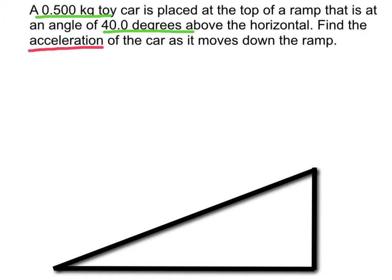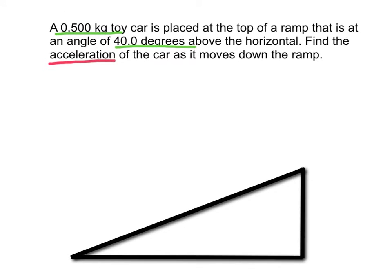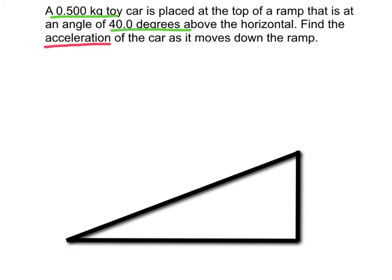First thing we should do with any problem that involves an inclined plane is draw a free body diagram. So I already have my ramp drawn here and let's draw a few things that we know. I've underlined the things we know in green. First of all, we know the angle of this incline to be 40 degrees. Next thing we can do is draw a free body diagram for our car. Free body diagrams represent objects by a box and then we draw the forces that are acting on that object.